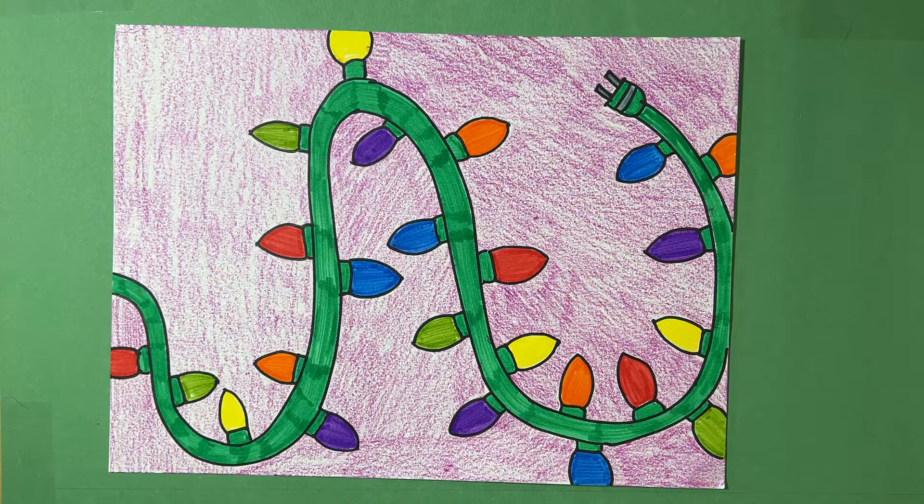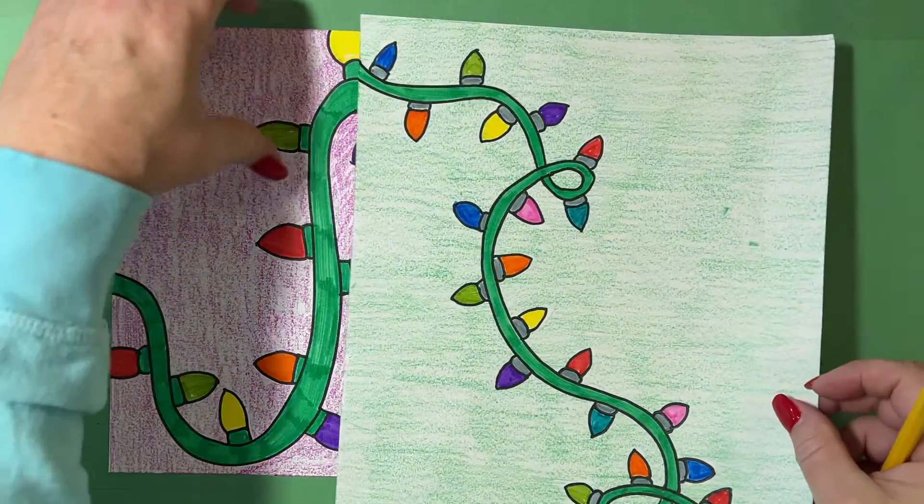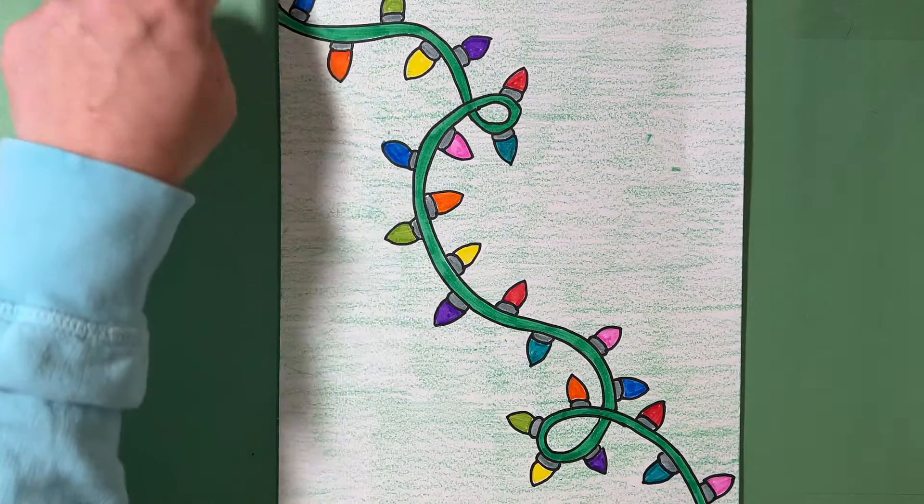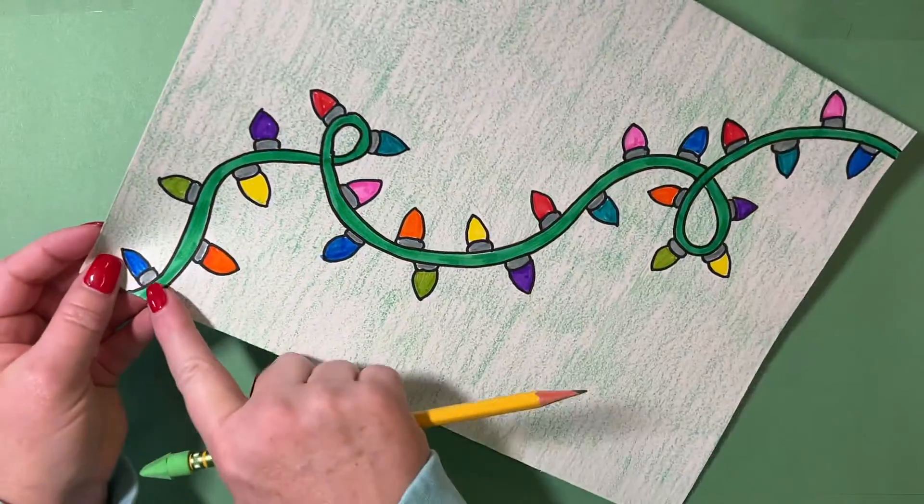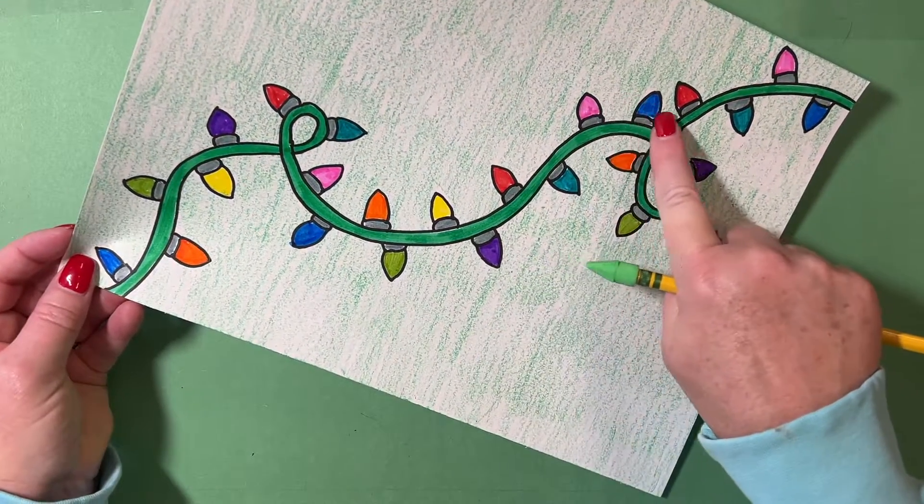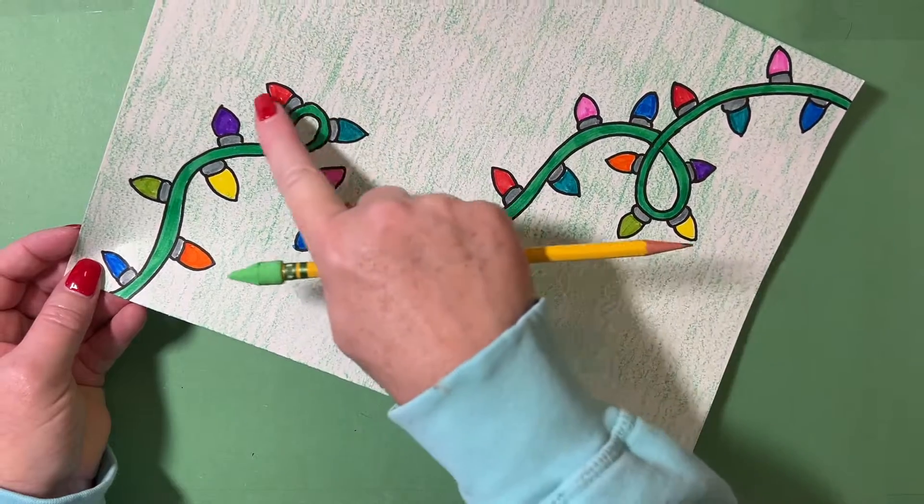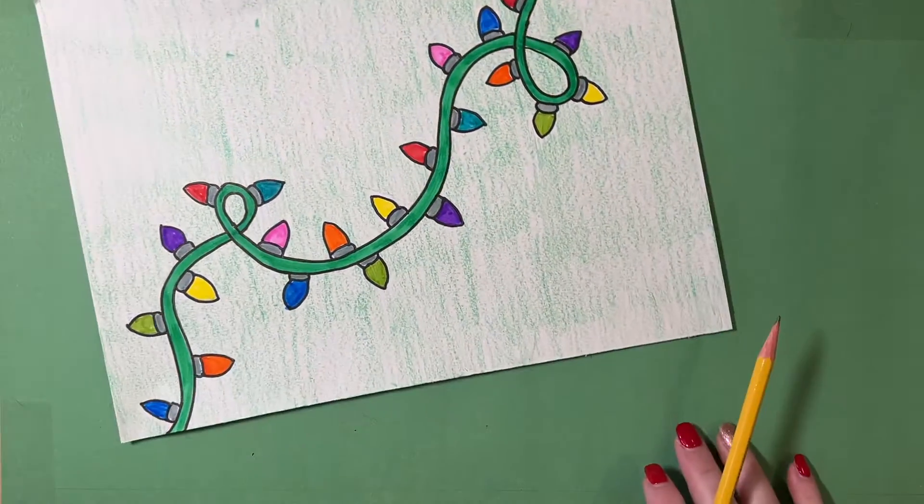Here's another example that I did where my lights are coming more at a diagonal like this, but they come across, they loop around, come around real curvy, loop around again and run off the page. And then of course, all along that line, I've got Christmas lights.